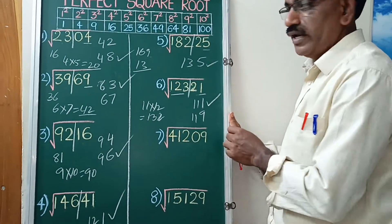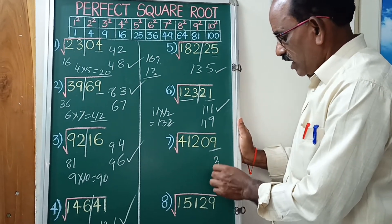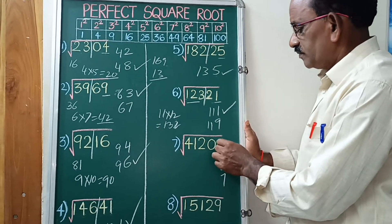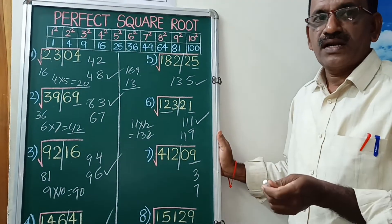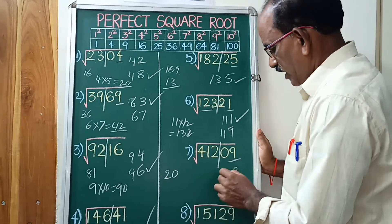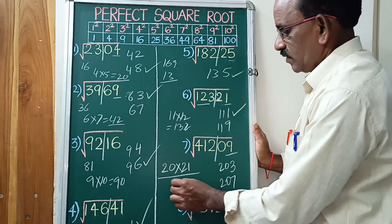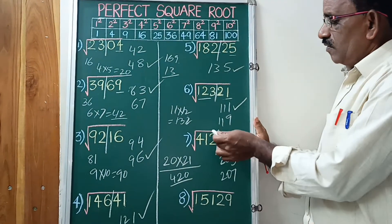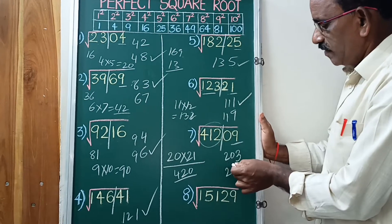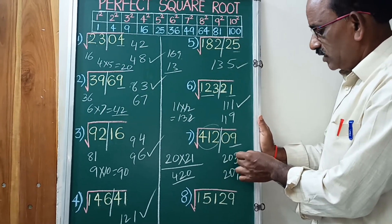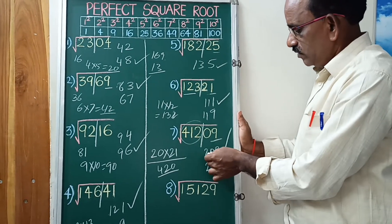Next: square root of 41209. The last digit is 9, so the unit digit is 3 (complement is 7). Take 1 and 2 digits with slash — before the slash is 412. The nearest square number below is 400, which equals 20 squared. Next: 20 into 21 equals 420. Compare 412 to 420 — 412 is less than 420, so we choose 20. Therefore, the square root of 41209 equals 203.